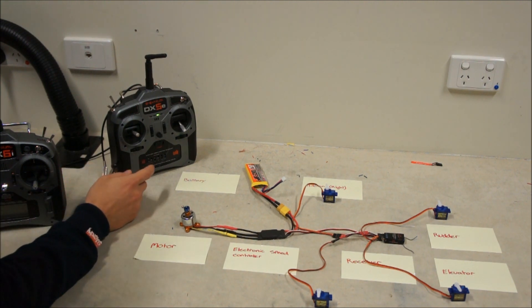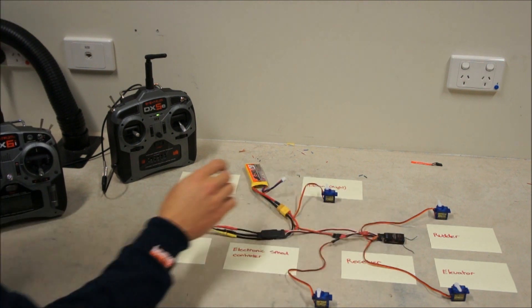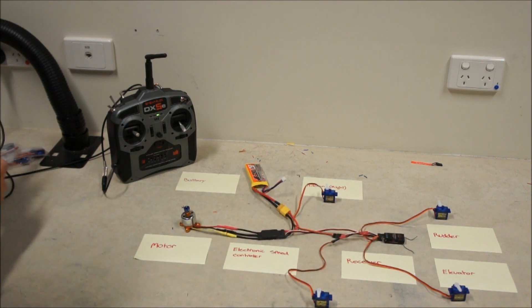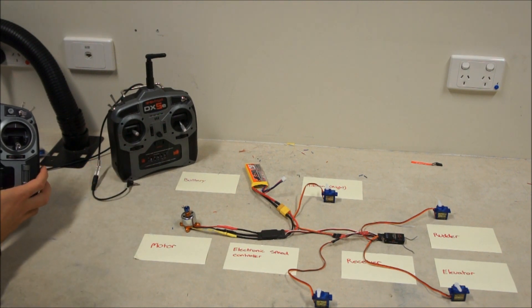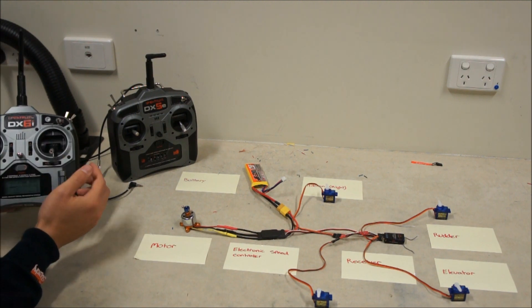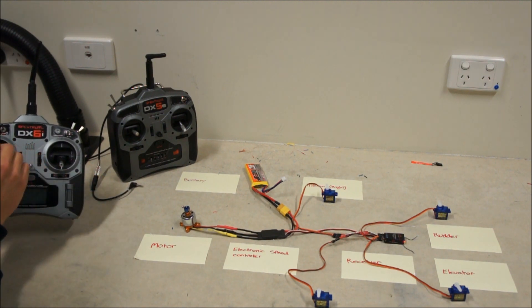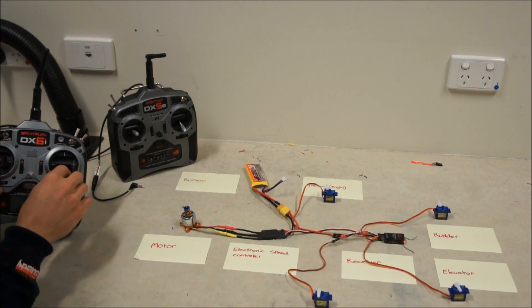So I've got my DX6i bound to this receiver, and so if I just take that cord out and I'll take that one out just so that receiver's off. Power on and we've got rudder, elevator, aileron left and right, and the throttle.